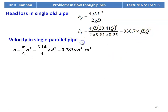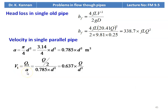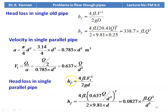Velocity in a single parallel pipe: area small a equal to pi by 4 D square, equal to 3.14 divided by 4 into D square, equal to 0.785 D square. Velocity equal to Q by a. For two parallel pipes sharing discharge, Q1 equal to Q by 2. So velocity equals Q by 2 divided by 0.785 D square, simplifying to 0.637 into Q by D square. Head loss in a single parallel pipe HF equal to 4FL V1 square by 2GD, substituting V1 equal to 0.637 Q by D square, simplifying to 0.0827 FL Q square by D to the power 5.